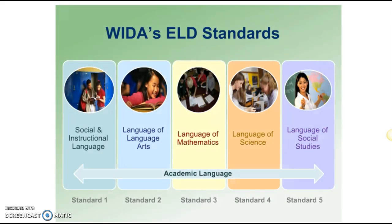The WIDA standards are going to cover all five areas of English language development: the social instructional language as well as the academic language of language arts, math, science, and social studies. So there are five different strands that we'll talk about.